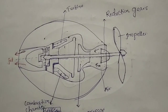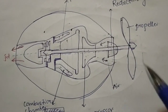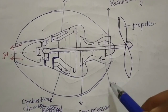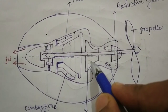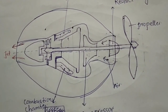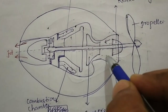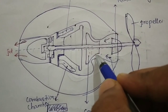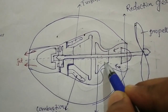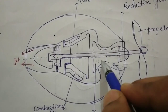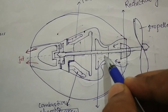Now let's see what happens in the turbo propeller jet engine. First, the atmospheric air enters the compressor. In the compressor, compression takes place. During compression, the pressure increases and the volume decreases.